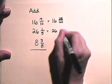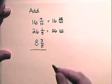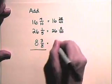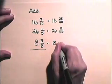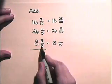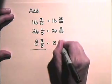We have 26 and 1 fifth. We need a denominator of 40. 5 goes into 40 eight times. 8 times 1 is 8. We have 8 and 3 eighths. We need a denominator of 40, so 8 goes into 40 five times. 5 times 3 is 15.